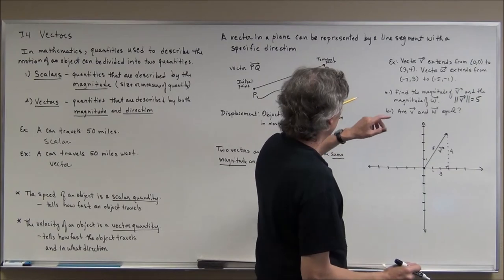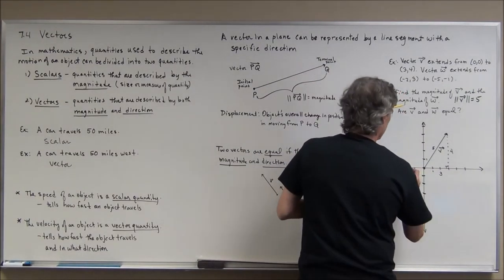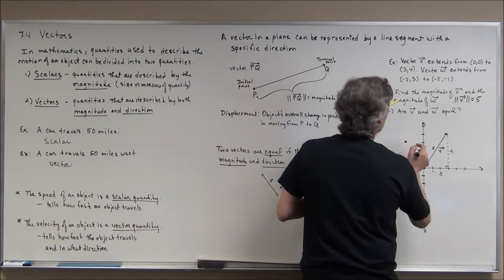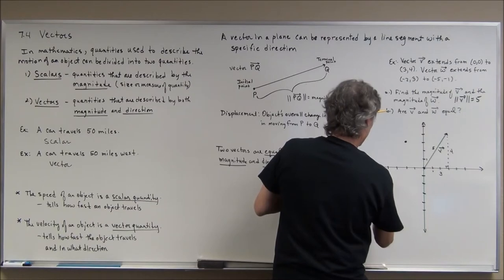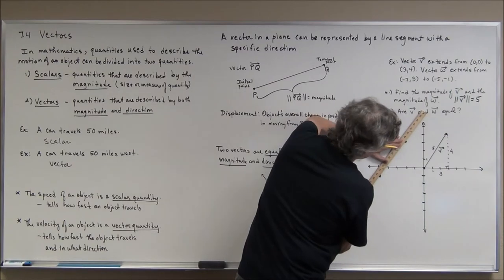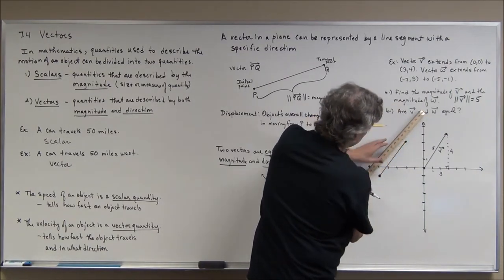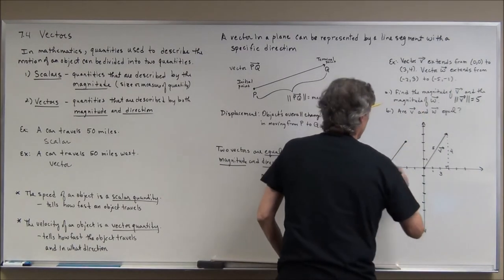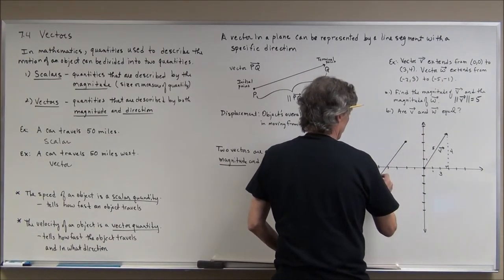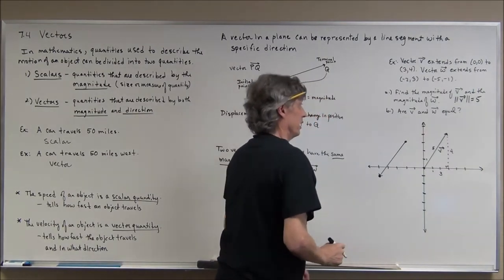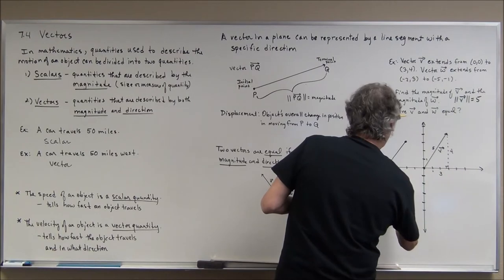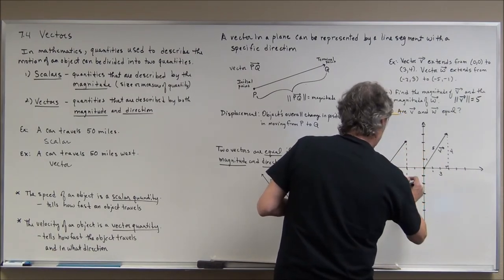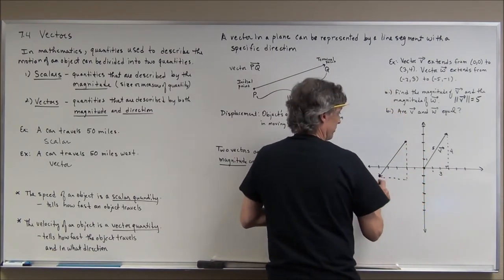I'll do vector w here from (-2,3), that'd be up here, to (-5,-1), that would be down here. It started here and ends here, so this is the terminal point, this is the initial point. I know what the answer is already but let's see if we can find its magnitude. If I construct a right triangle here...